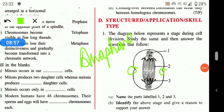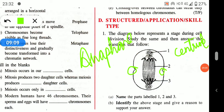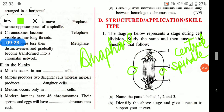Labeling the diagram: part 1 is the centriole — be careful here, as aster rays may also be asked; if the dot is indicated, it is the centriole. Part 2 is the spindle fiber. Part 3 — students may get confused — this is not just chromosomes; you should label it as daughter chromosomes or chromatids, but preferably write 'daughter chromosomes.'